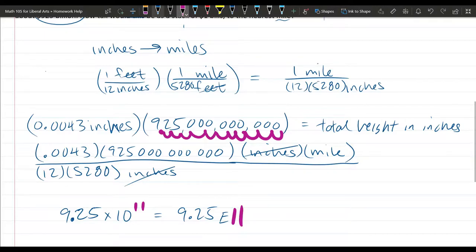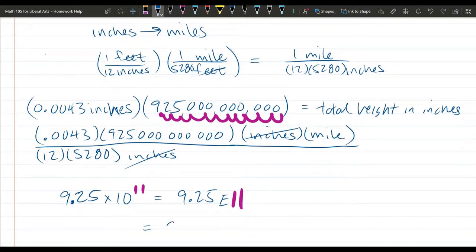Which would mean your answer, you're going to move this 11. 1, 2, 3, 4, 5, 6, 7, 8, 9, 10, 11. And that's your new decimal point position. And these are all filled in with zeros.